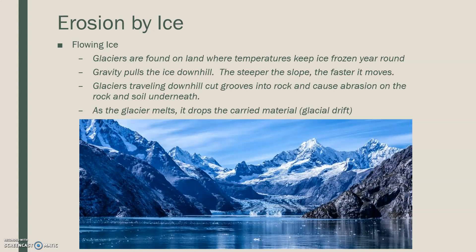So glaciers are traveling downhill — they're going to cut grooves into rock and basically cause weathering to occur. It's going to be in the form of abrasion because the rock and soil underneath it are going to be weathered down. As the glacier melts, it's going to drop whatever material it was carrying, as well as whatever material it's abrading off the sides, into the carried material, which will be known as glacial drift.